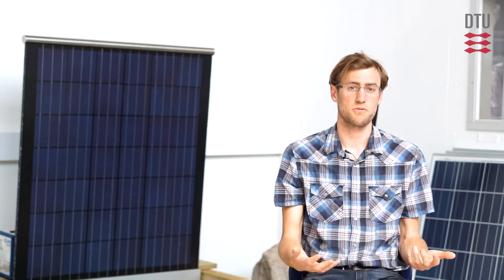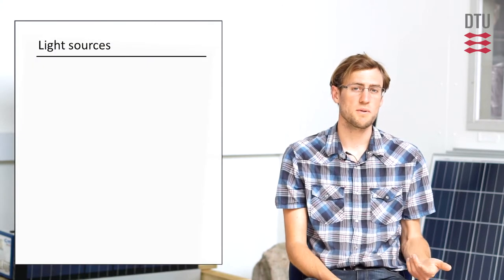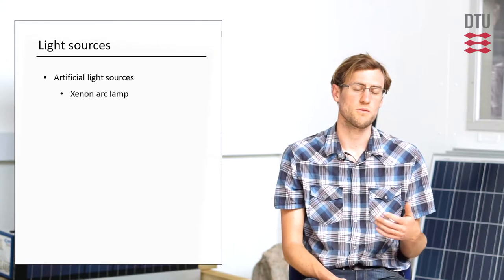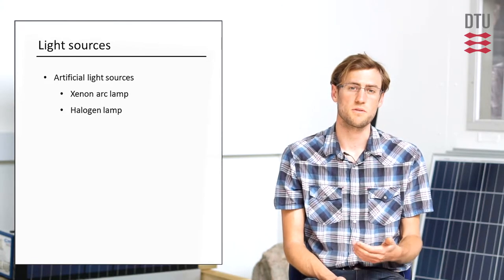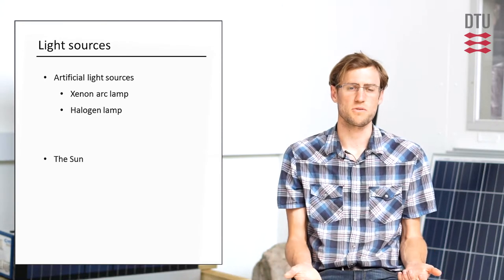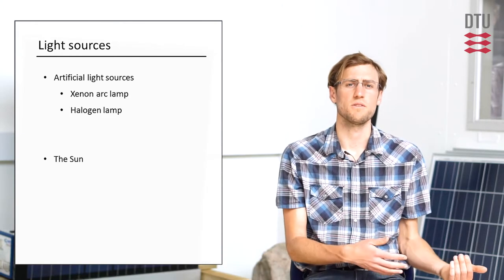To generate the electron hole pairs and to get photo current through the cell, we need a light source. The most common light source that's used is the xenon arc lamp, although sometimes halogen lamps are used, and we can use the sun as an illumination source because ultimately PV devices are intended for field use.